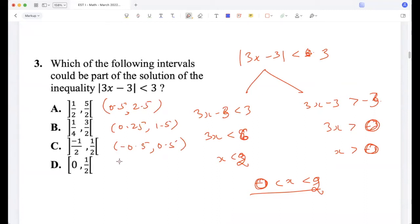Okay, yeah. Now, yeah. And this is from 0.5 to 0.5. Okay, so 0.5 to 2.5 is not possible. 0.25 to 1.5, this is possible. Negative is not possible, and 0 is not possible. So it's B.